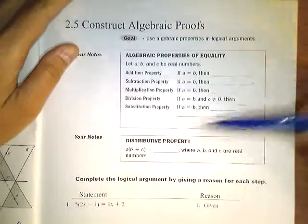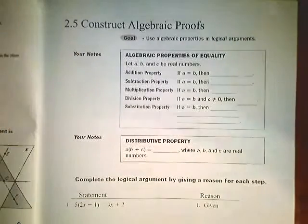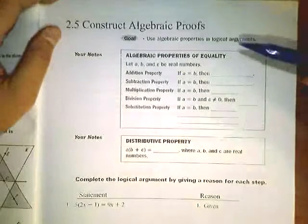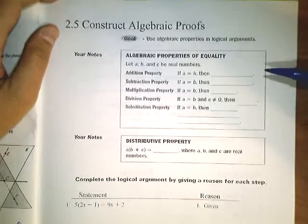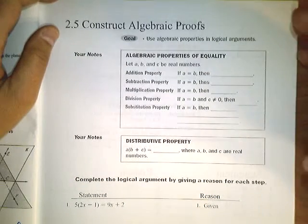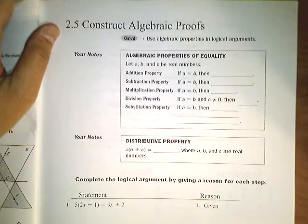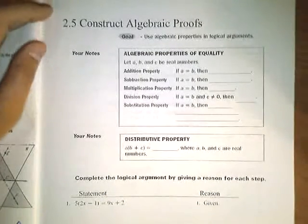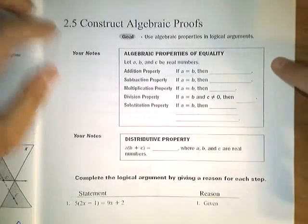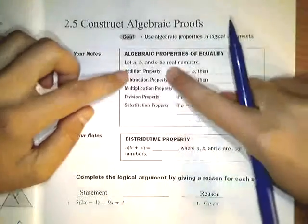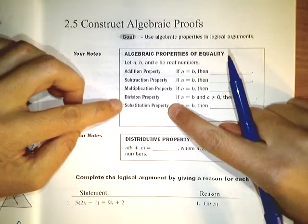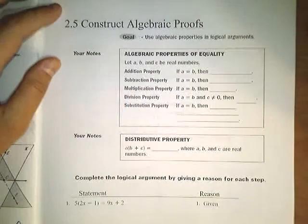We're going to be memorizing a lot of these things called properties. Properties are rules that we're going to write down as reasons for why we do things. It's going to be really important for you to memorize the different types of properties and what they're called, and be able to recognize them when they occur.